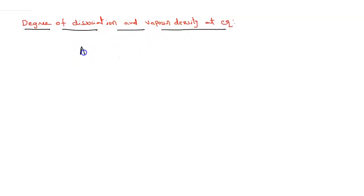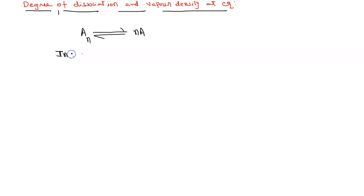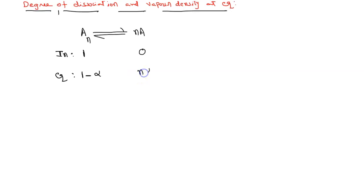Let us consider: A_n is going to split into n·A. Initially I am going to take one mole of A_n; initially there will be 0 moles of A. At equilibrium, alpha moles of A_n have dissociated, giving 1 minus alpha moles of A_n, and you can get the concentration of A at equilibrium as n·alpha. Here alpha is the degree of dissociation.